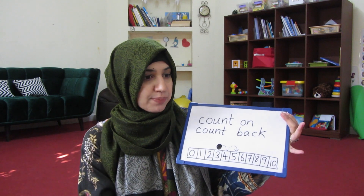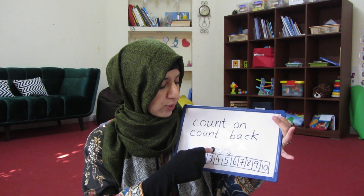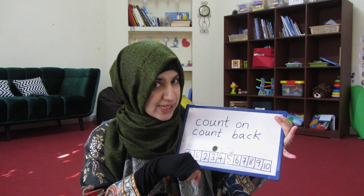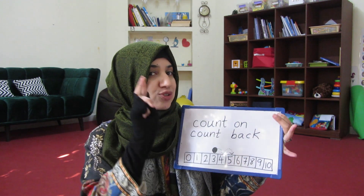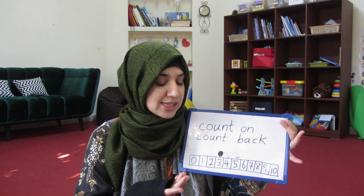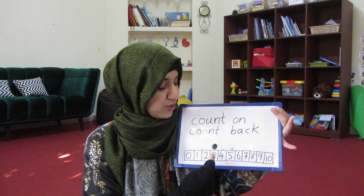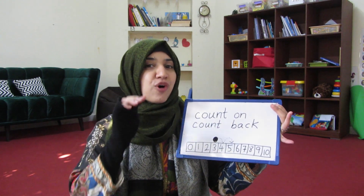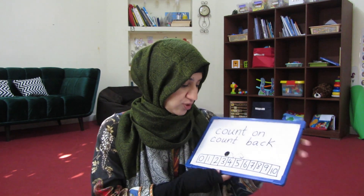When using the number path, tell the child to imagine they are a frog standing on a number. You have to count the number of hops — for example, if the frog is on 3 and hops to 4 then to 5, those are two hops. The purpose is that the child does not count the number they are already standing on, because counting that starting number leads to the wrong answer. Counting the hops or steps gives the right answer.